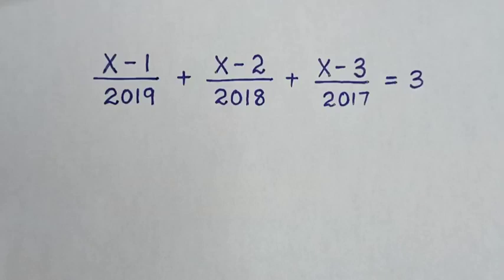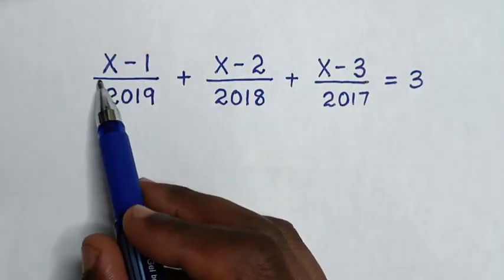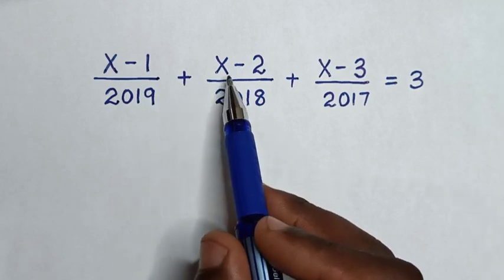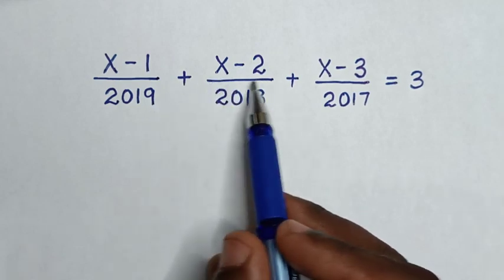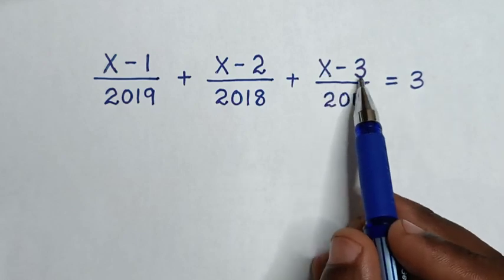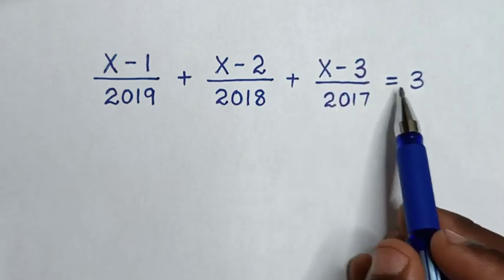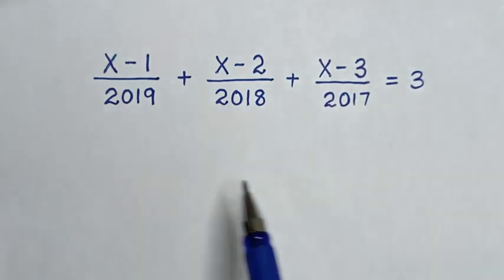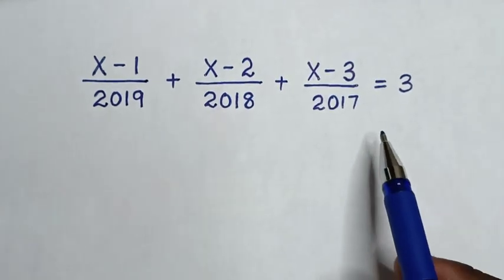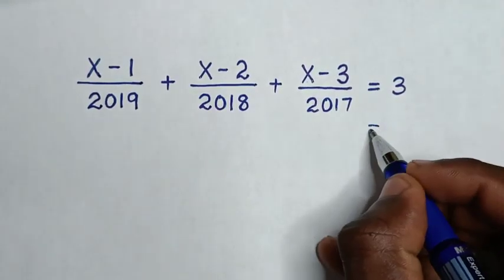Hello! How to solve (x minus 1) over 2019 plus (x minus 2) over 2018 plus (x minus 3) over 2017 is equal to 3. To find the value of x from this equation, 3 is equal to 1 plus 1 plus 1.